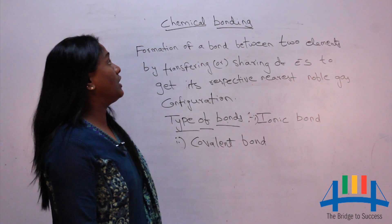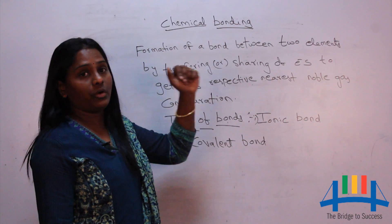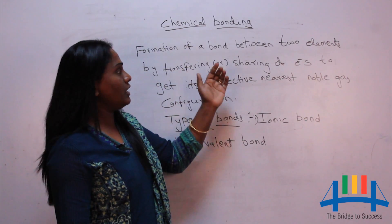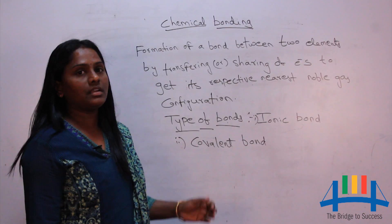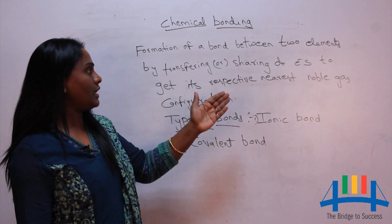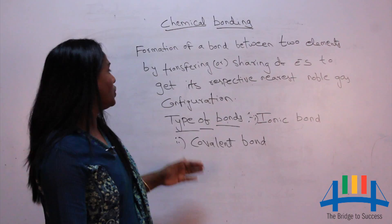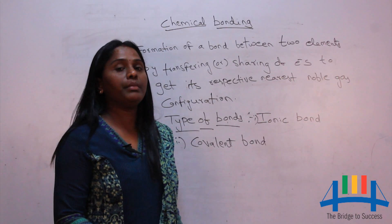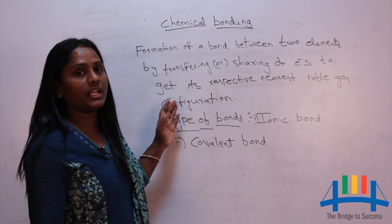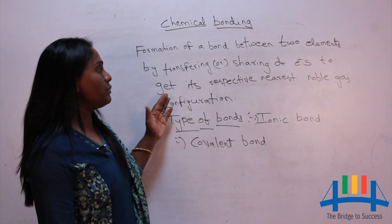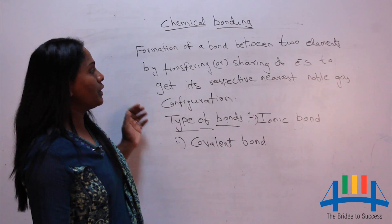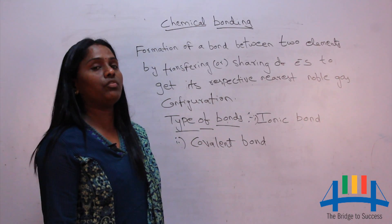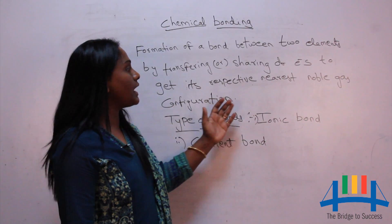Hello everyone, today we learn about chemical bonding. In the formation of a bond between two elements, whether by transferring or sharing of electrons, the goal is to get the nearest noble gas configuration. The main aim of bonding between two elements is to get more stability.